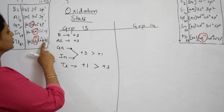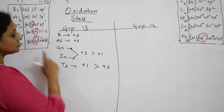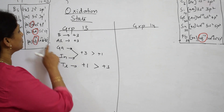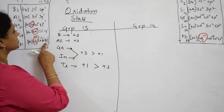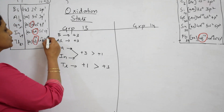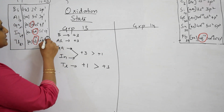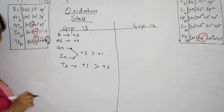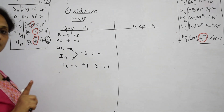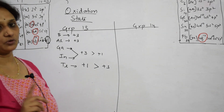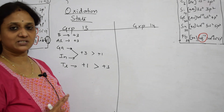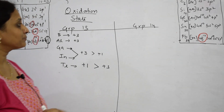Thallium will not lose all 3 electrons — only +1. It is going to lose only this one electron from 6p1. Only 1 electron participates in bonding. We'll see what is the reason for that.